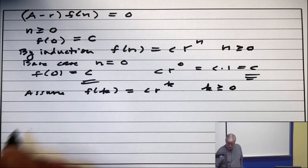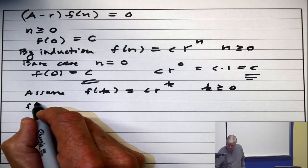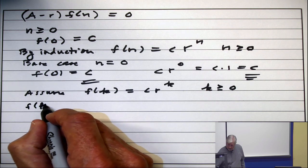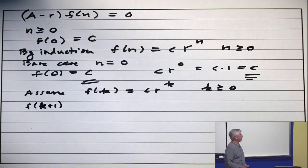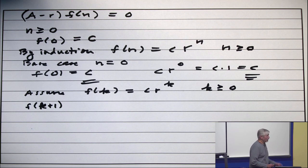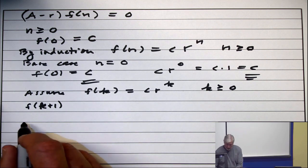Then you look at f(k+1). How do I get f(k+1)? I go back up to the advancement operator equation.